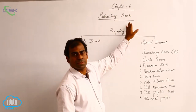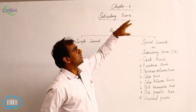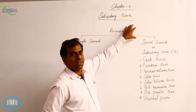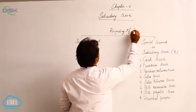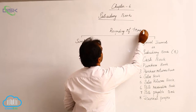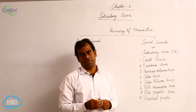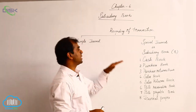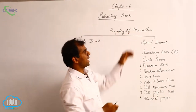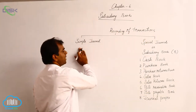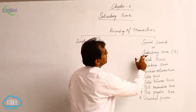Chapter 6: Subsidiary Books. Today we are going to discuss what are subsidiary books. The question of maintaining subsidiary books arises for the purpose of recording of transactions. In the initial chapters, we have discussed what is a transaction, how to identify a transaction and how to record a transaction. We have already recorded the transactions using a simple journal. Recording of transactions can be done either by way of maintaining a simple journal or by maintaining special journals, or what we call as subsidiary books.